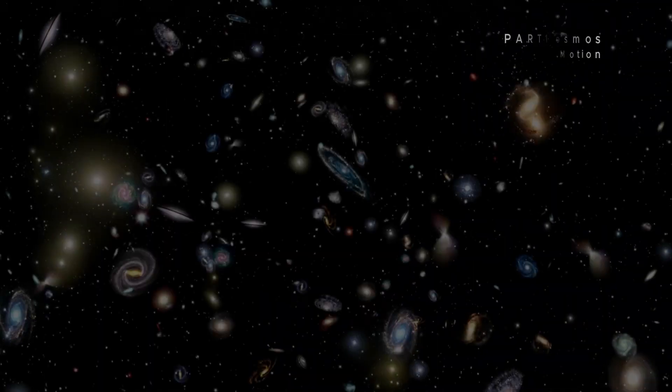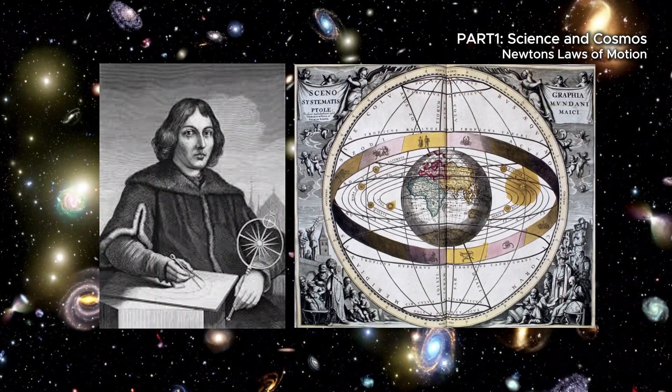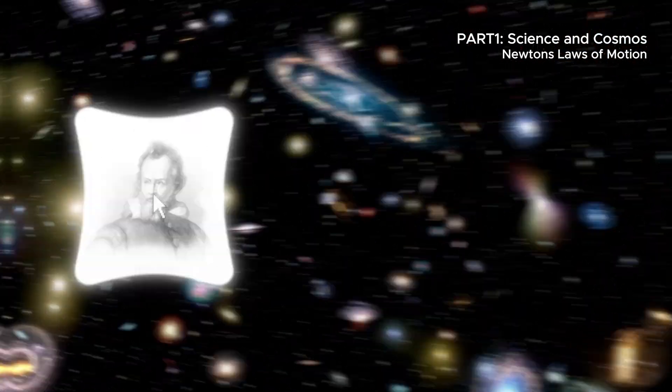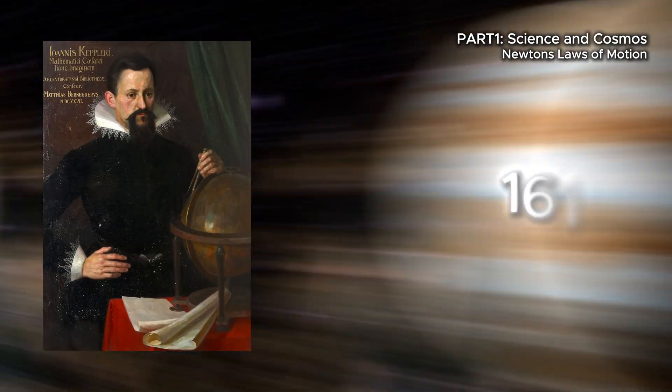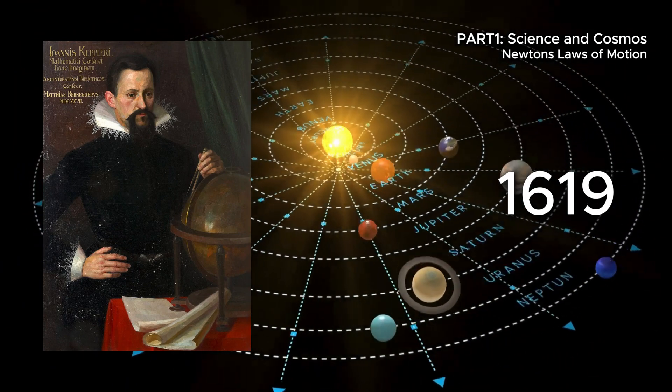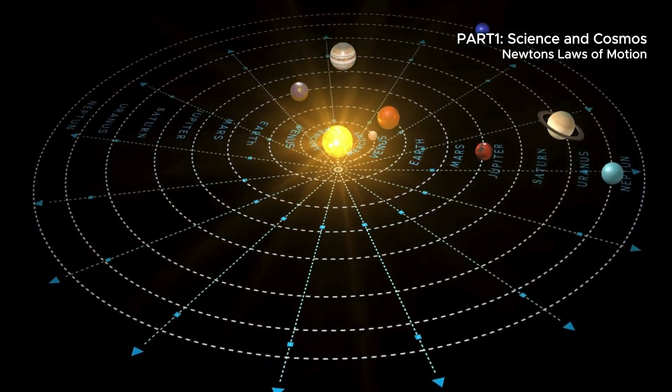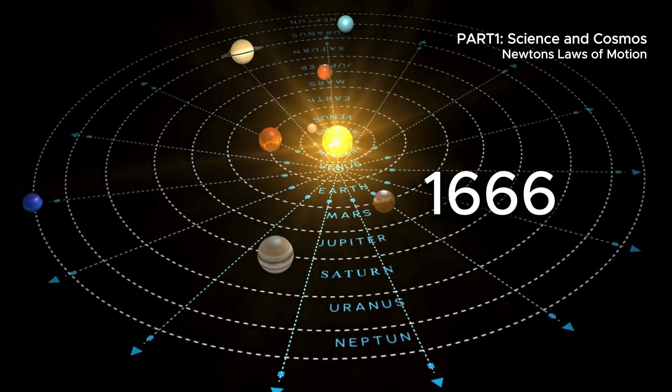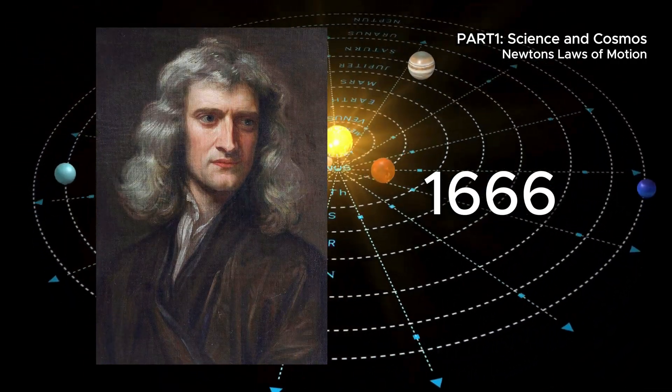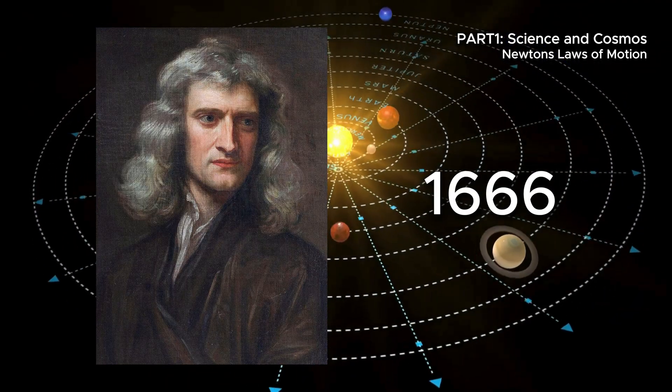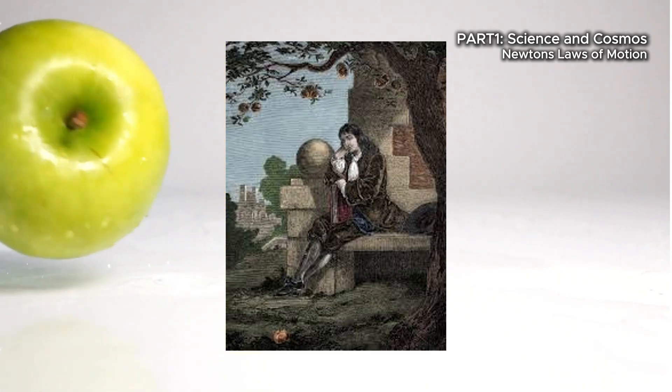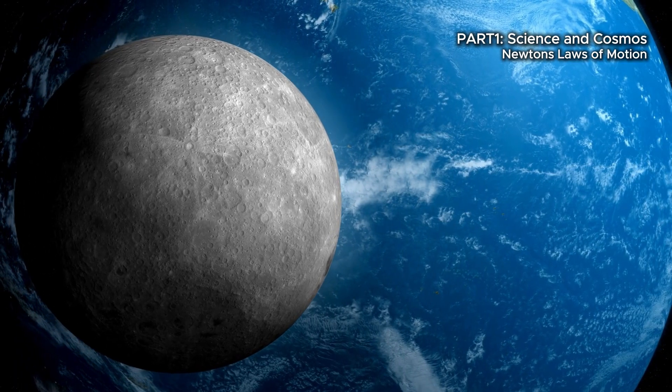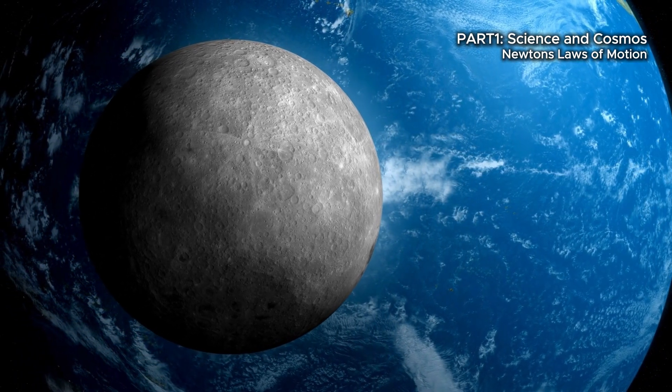Long before Newton, Copernicus challenged the geocentric model of the universe. In the 1500s Galileo observed Jupiter's moons in 1610 and Kepler, by 1619, had outlined precise laws of planetary motion. But it was in 1666 during the great plague when a young Isaac Newton, in self-isolation at his family farm, began to connect it all. Legend speaks of an apple falling. But what stirred Newton wasn't the fall itself, it was the question. Could the same force pulling the apple to Earth also be pulling the moon toward us?